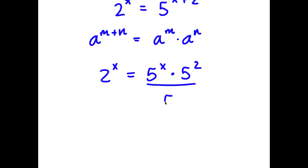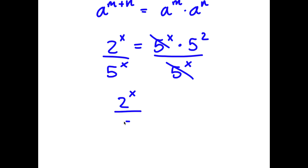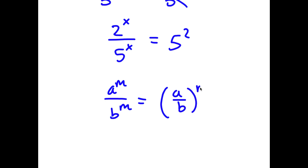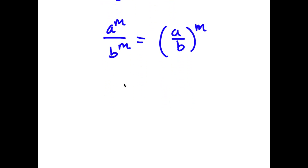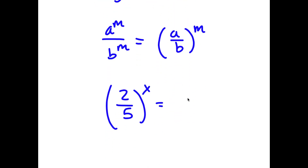Now, if I divide both sides by 5 to the power of x, these two cancel out, and I get 2 to the power of x over 5 to the power of x is equal to 5 squared. And if I have something in the form a to the power of m over b to the power of m, this is equal to a over b to the power of m. So 2 to the power of x over 5 to the power of x is going to be 2 over 5 to the power of x, which is equal to 5 squared.